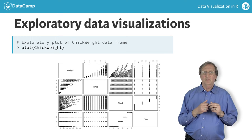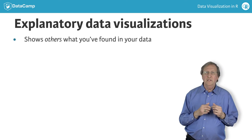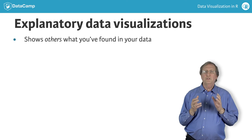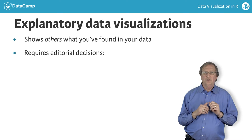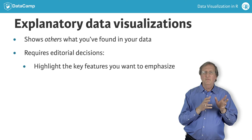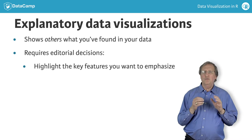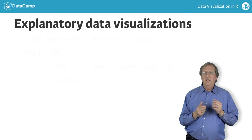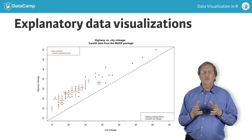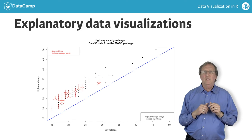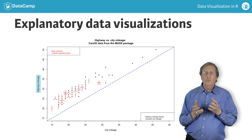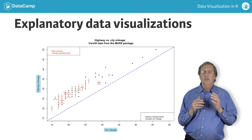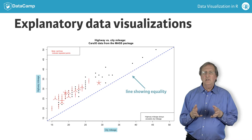Explanatory data visualizations show others what you have found in the data. This means you must make editorial decisions: what features do you want to highlight for emphasis, and what features are distracting or confusing and should be eliminated? Here is an explanatory plot constructed from the CARS-93 data frame in the MASS package, emphasizing that highway mileage always exceeds city mileage using techniques like reference lines and sunflower plots that you will learn about in this course.